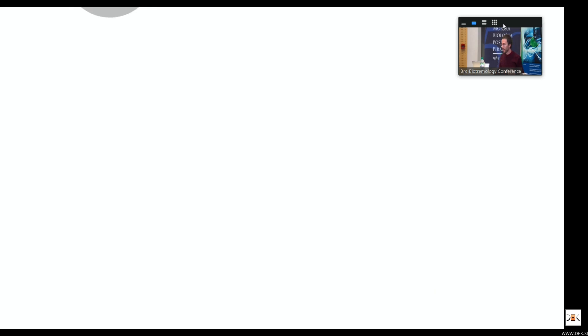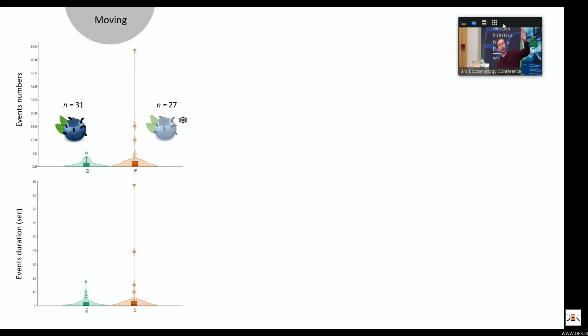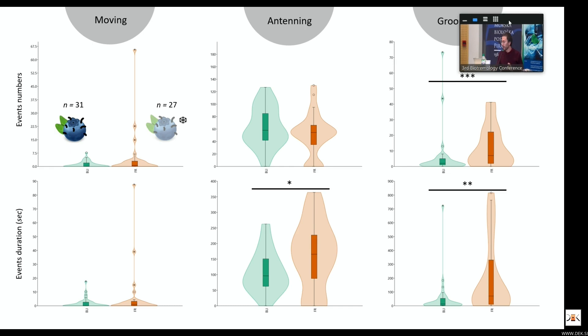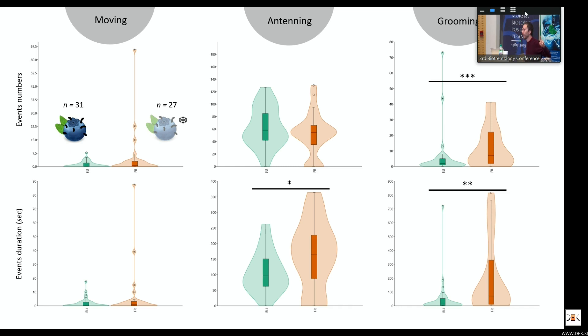Let's see when it comes to behaviors. When we look at moving, on the top side you have the number of events and on the bottom you have the duration of the event. You can see that there's no difference in terms of moving. In both cases they moved more or less similarly. When it comes to antennating, the numbers of antennating events were very similar, so there's not a statistical difference. But the duration is actually higher in the frozen case, when the blueberries were frozen. When we look at grooming, the insects on fruit that were frozen, without larvae, they spend more time grooming, cleaning the antenna, cleaning the wing.